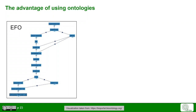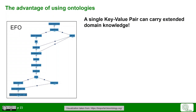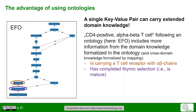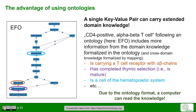In practice, if we use a single key-value pair for metadata annotation based on ontology terms and ontology IDs, we get access to extended domain knowledge. For 'CD4-positive alpha beta T cell' — coming from the EFO ontology but originating from the cell ontology — we know it carries T cell receptor alpha and beta chains, is a subclass of mature alpha beta T cells having completed thymic selection, and belongs to the hematopoietic system. This knowledge is clear for a domain expert, but a computer could not otherwise know it. Due to the formalized ontology format, the computer has access to this knowledge.